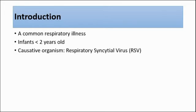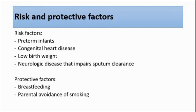These are some of the risk and protective factors for bronchiolitis. The risk factors are preterm infants, especially those who develop bronchopulmonary dysplasia, and also infants with congenital heart disease, low birth weight, and neurologic disease that impairs sputum clearance. Whereas for protective factors, infants that are breastfed will be at a lower risk of getting bronchiolitis, and also parental avoidance of smoking helps as well.